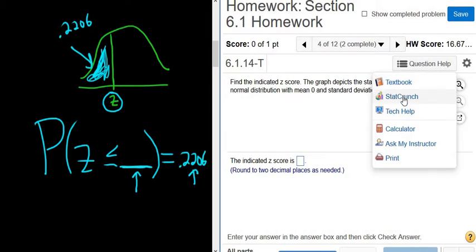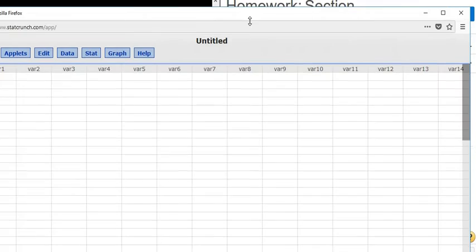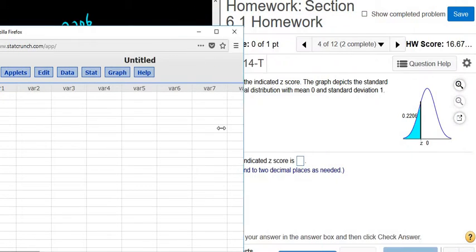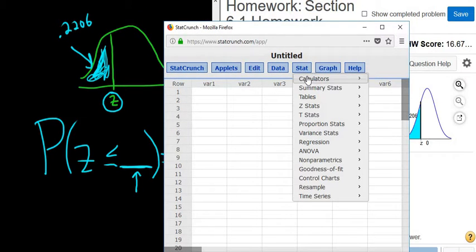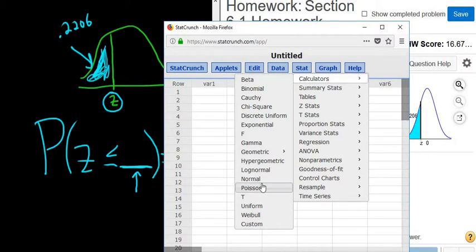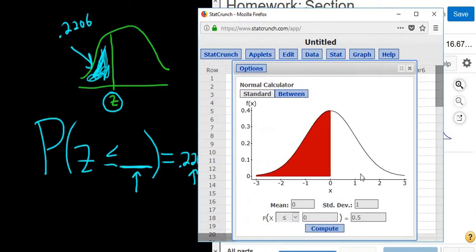You click on Question Help and go to StatCrunch. Then you go to Stat, Calculators, Normal. It's shaded to the left, so we leave it at less than. The mean and standard deviation are 0 because it says it in the problem. So we have to enter the area.